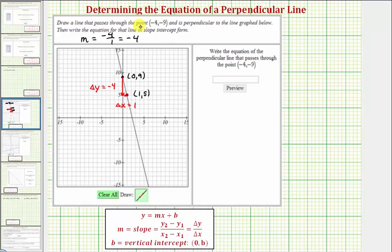Now it doesn't ask, but because the given line also has a vertical intercept of nine, the equation of the given line would be y equals negative four x plus nine.